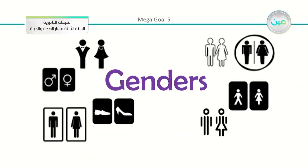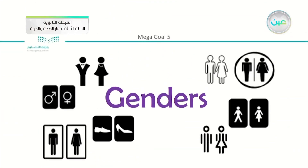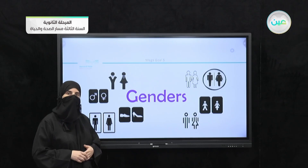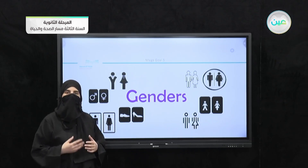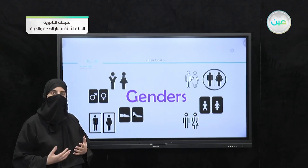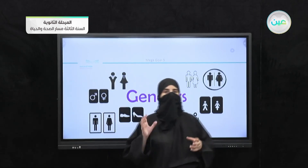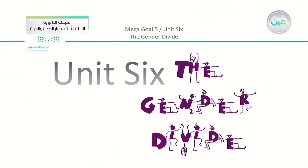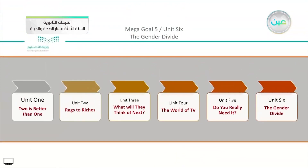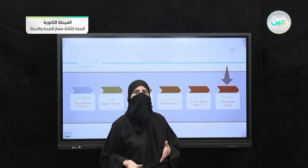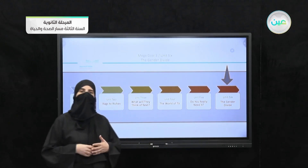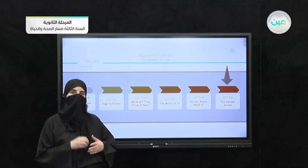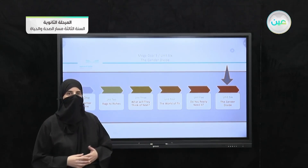Now we are going to move on and see our new unit, which is going to be the last unit, inshallah. We can see there are different ways to represent gender. We have Unit 6, which is titled 'The Gender Divide.' In this unit, which is the last one, we have related the types of advertisements to people in society. Specifically, we are going to talk about the topic of genders.